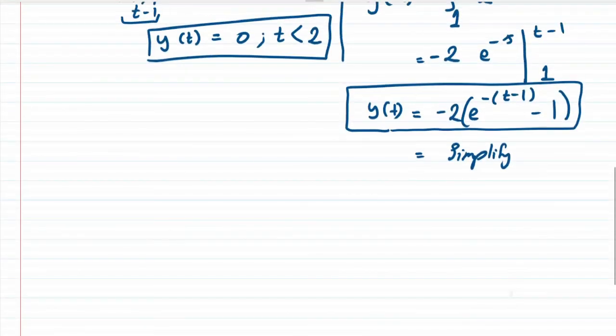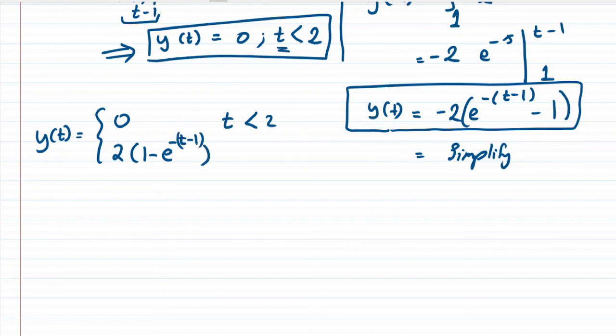It is 0 when t is less than 2 as per the first case, and it equals 2(1 - e^(-(t-1))) when t is greater than 2.